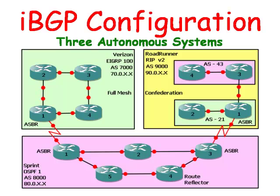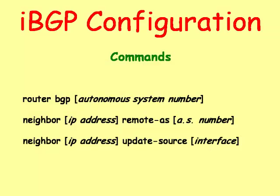Let's look at what is needed in order to create a simple autonomous system. The router BGP command puts the router into BGP configuration mode. The neighbor remote-as command forms a BGP session with other routers. The neighbor update-source command chooses which interfaces will be used for advertisement.